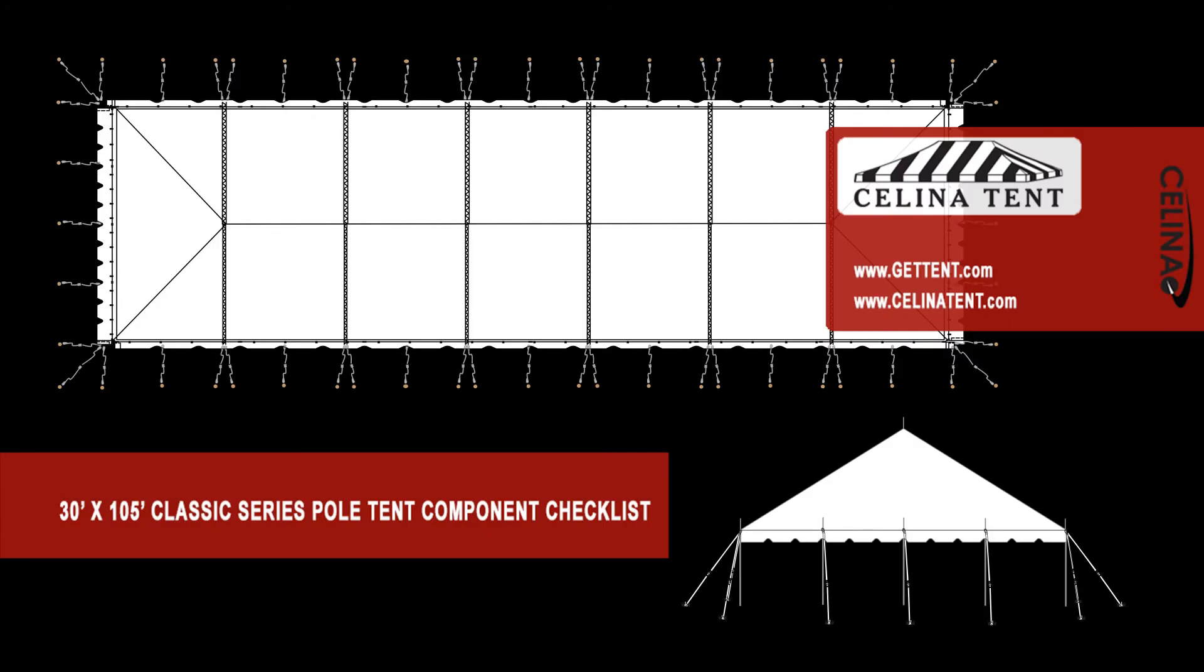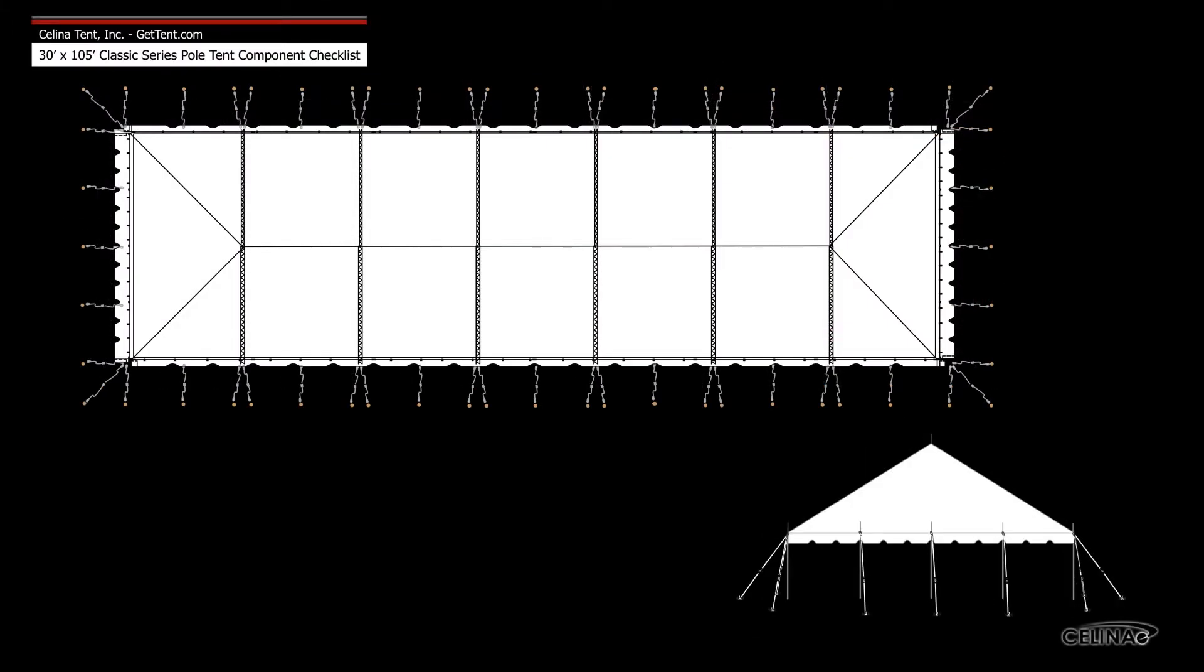This is an overview of the components required to set up a 30 foot by 105 foot classic pole tent from Celina Tent. This tool may be used to measure and compare existing pole components to ensure compatibility.